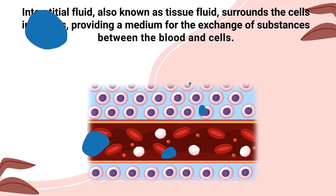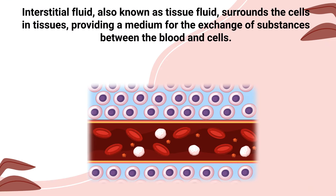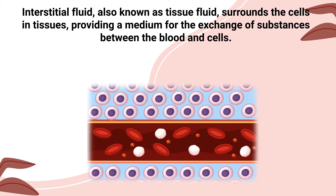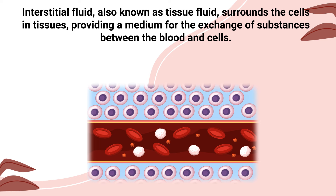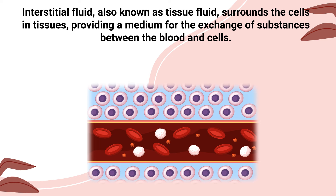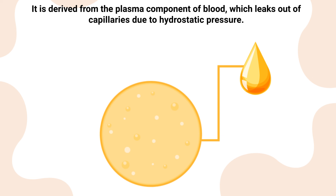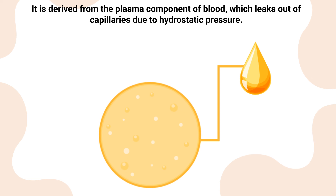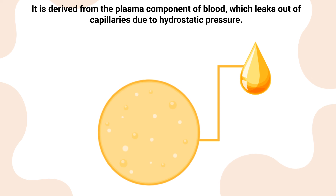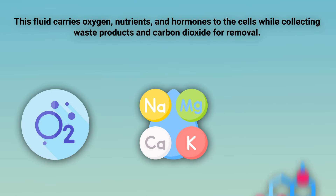Interstitial fluid, also known as tissue fluid, surrounds the cells and tissues, providing a medium for the exchange of substances between the blood and cells. It is derived from the plasma component of blood, which leaks out of capillaries due to hydrostatic pressure. This fluid carries oxygen, nutrients, and hormones to the cells while collecting waste products and carbon dioxide for removal.